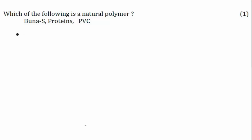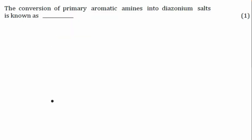Let's look at this question: which of the following is a natural polymer? The answer is protein — only theoretical knowledge needed here.